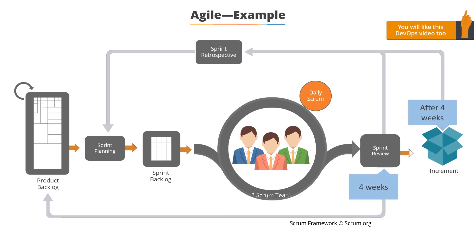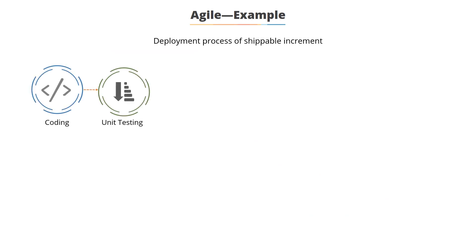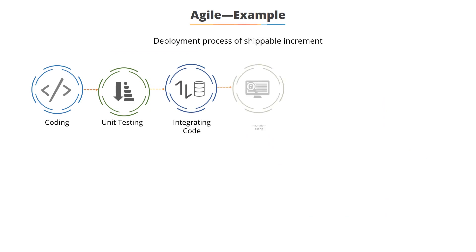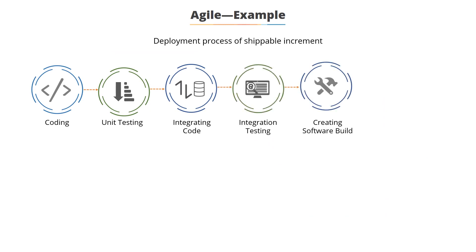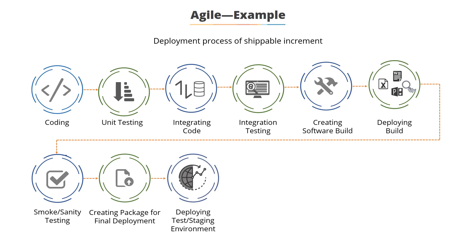At the end of these 4 weeks, you need to be able to deliver a potentially shippable increment. In the easiest terms, the deliverable should be complete and of sufficient quality that, if needed, you should be able to deploy it in a production environment. That is a lot of work: you need to complete coding, unit testing, integration testing, create a software build, deploy the build, do smoke or sanity testing, create a package for final deployment, and eventually deploy it on a test or staging environment.